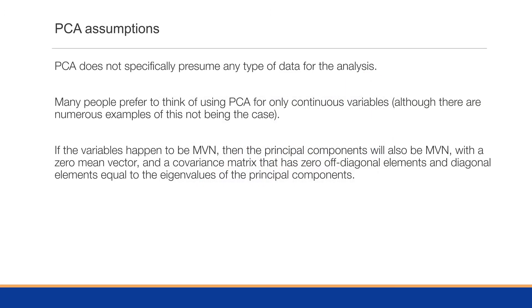Before running PCA let's deal with a couple of assumptions. PCA does not specifically presume any type of data; many prefer continuous variables, but there are numerous examples where that is not the case. For categorical variables there is another method called correspondence analysis, covered in a later video. If the variables happen to be multivariate normal, then the principal components will also be multivariate normal with a zero mean vector and a covariance matrix with zero off-diagonal elements and diagonal elements equal to the eigenvalues.